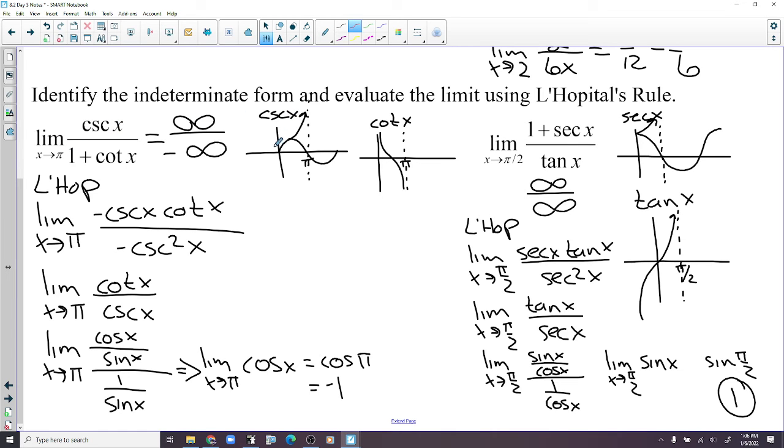Cosecant of pi is infinity and cotangent of pi is negative infinity. So there's your indeterminate form. Take the derivative. Cancel out the cosecants. Turn everything into sines and cosines. Multiply by sine, and you just get cosine. Cosine of pi is negative 1.